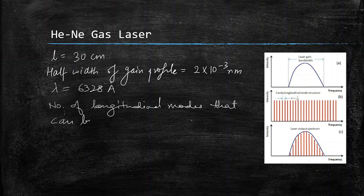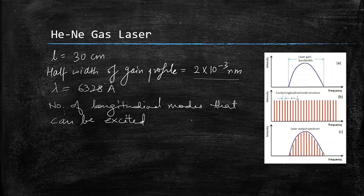Before solving, let's understand the concept using three graphs. The first shows the laser gain bandwidth — this is the bandwidth of our gain profile. We can find the separation between different modes. Not all modes can be excited; only those modes falling within the region of this bandwidth will be excited.